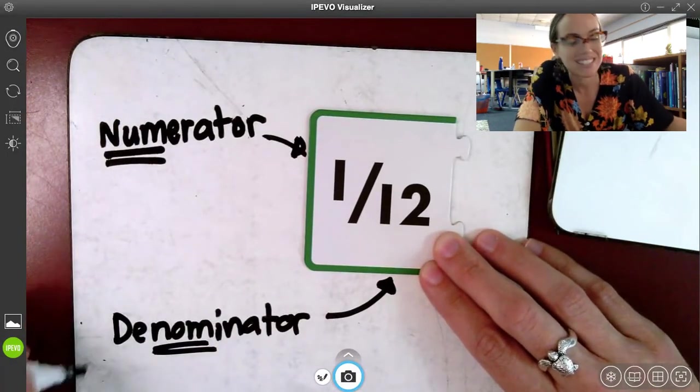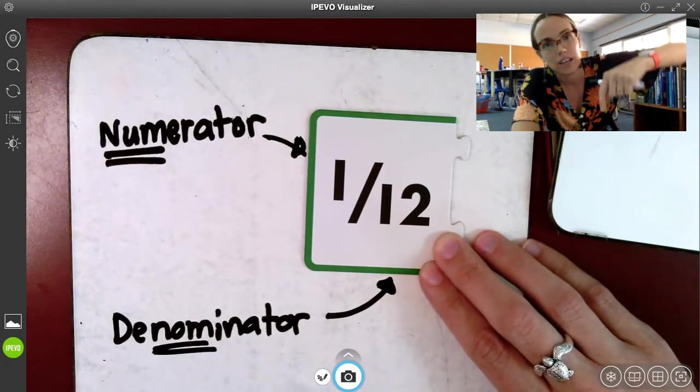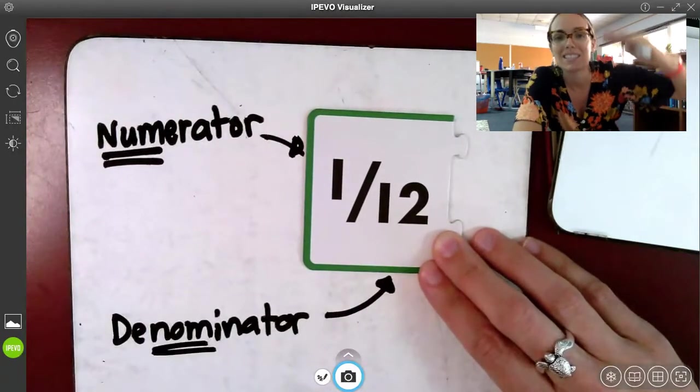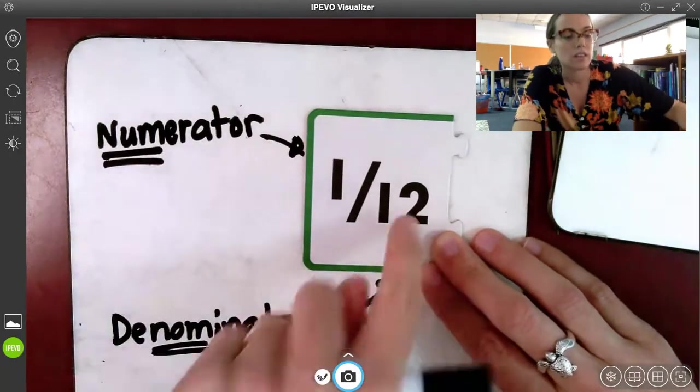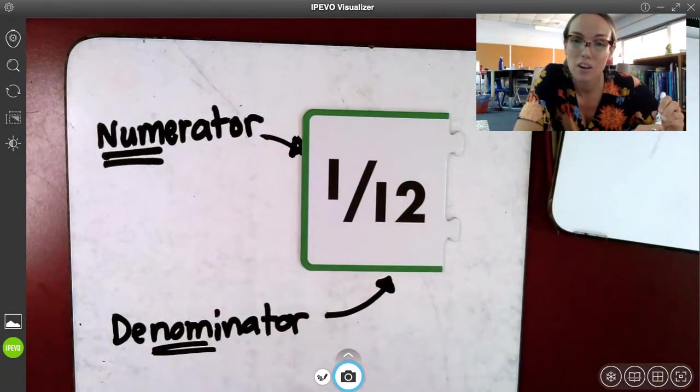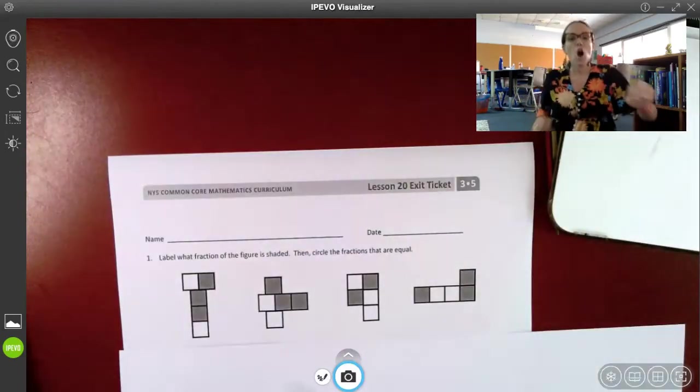Remember, there's our root, nom. That means number. And d is a prefix that means down, like decrease. It means down, to go down. So denominator is the down number. The number on the bottom, which also means the total number of pieces that our whole is split into.